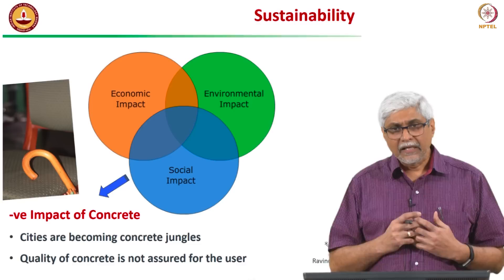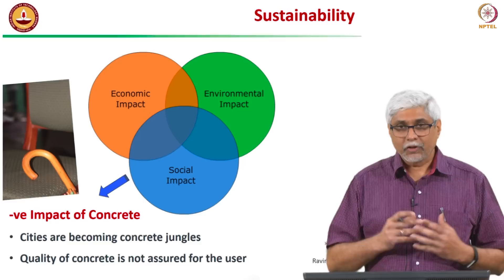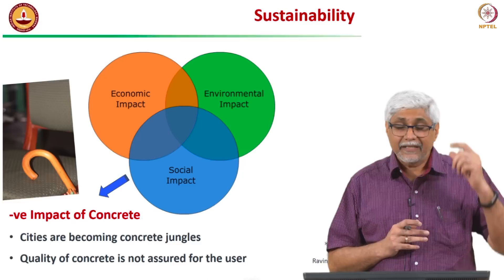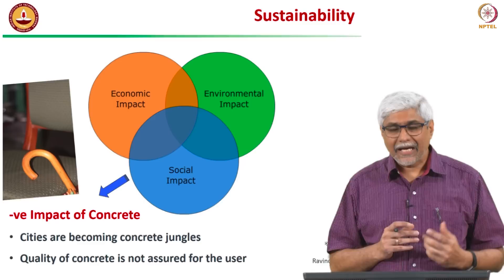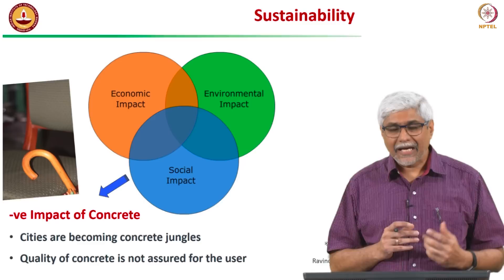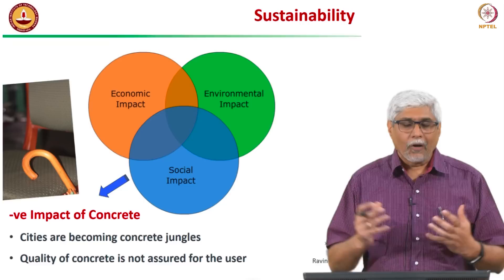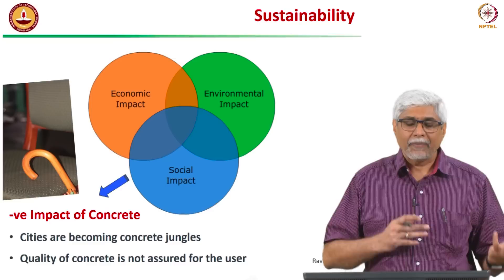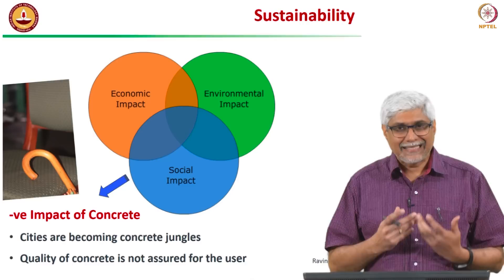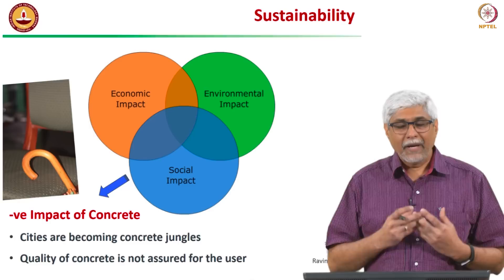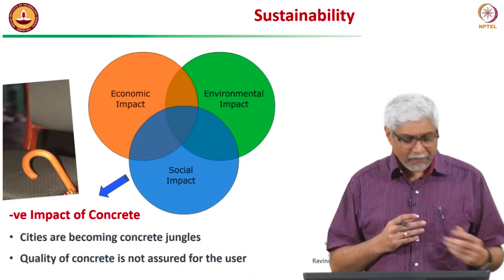We are constructing a lot — cities are becoming concrete jungles. When we have to change our cities and demolish buildings, we are going to generate a lot of waste. Another negative social impact is that the quality of concrete is not always assured. Unlike many other products made in a factory to a certain standard, concrete can be made anywhere — at the site, in a plant. The user who has not tested the concrete is not ensured of quality, and there is always this feeling that something could have gone wrong.